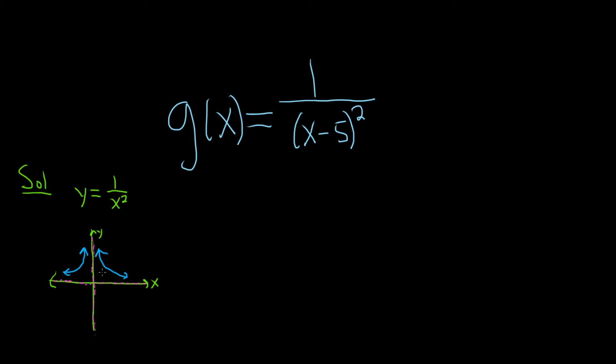We just have to figure out how to shift this. Whenever you subtract a number from an x value in a function like this, you think you're going left, but no, it's backwards. We're actually going right. So we're going to shift this right 5.